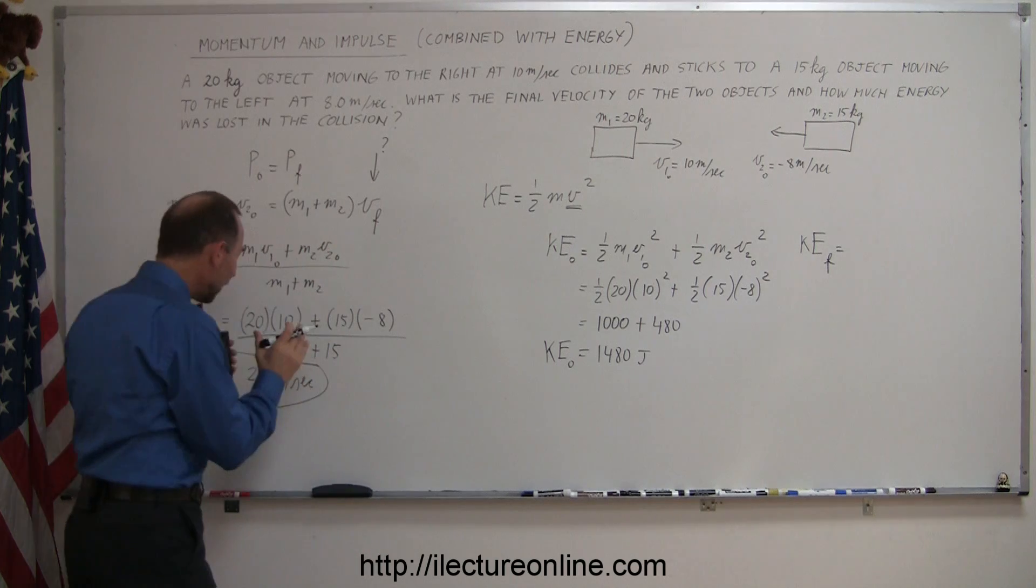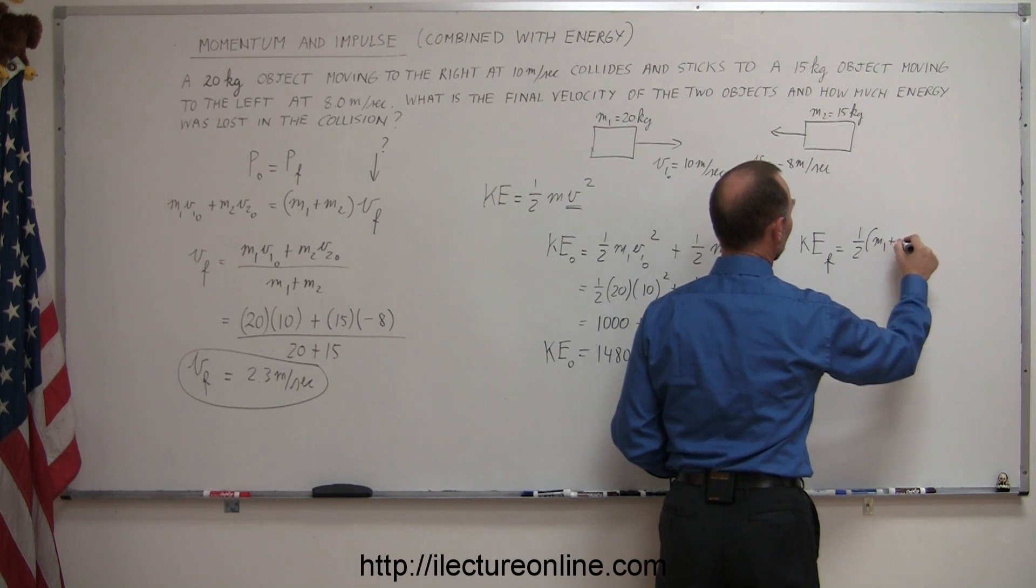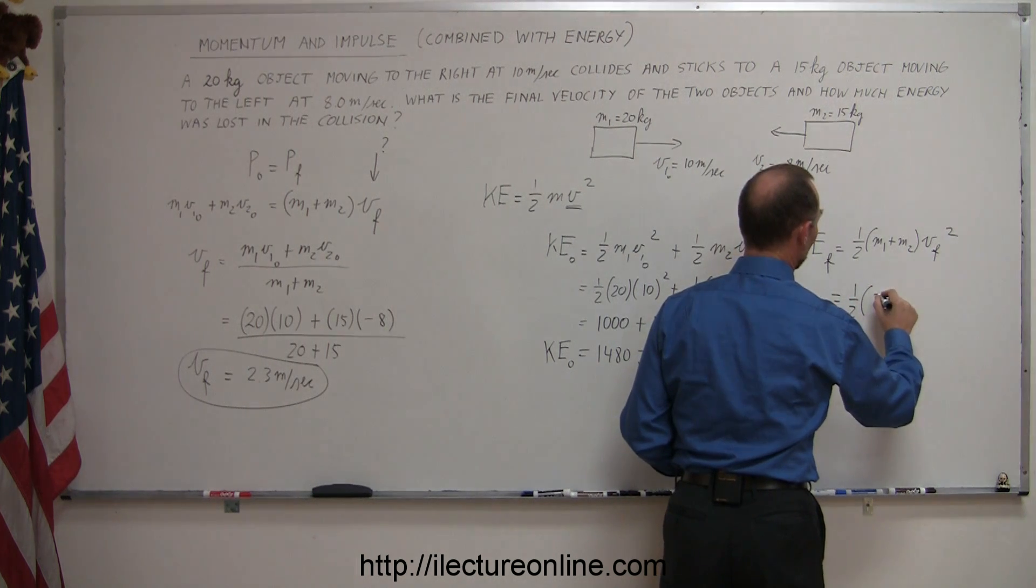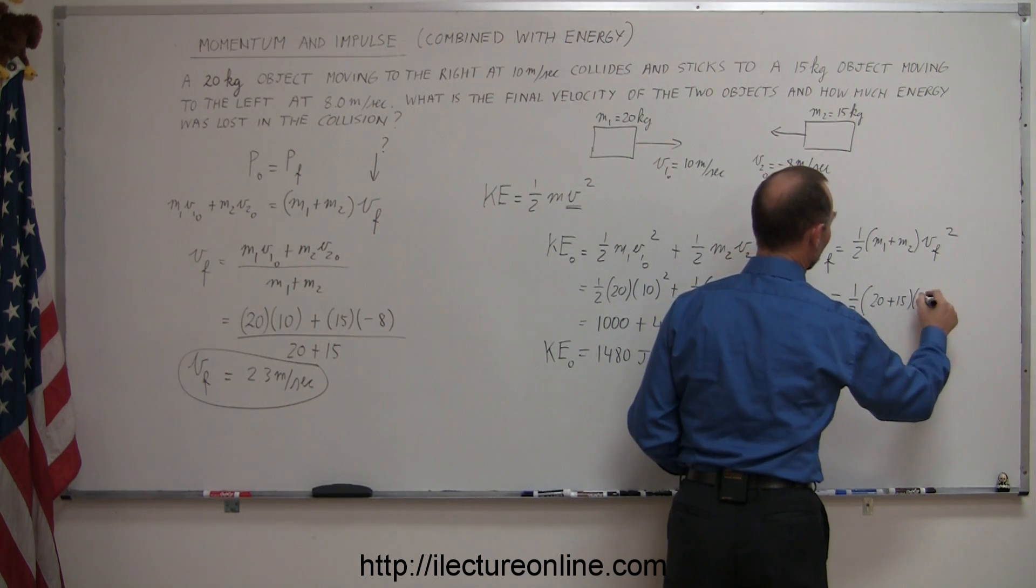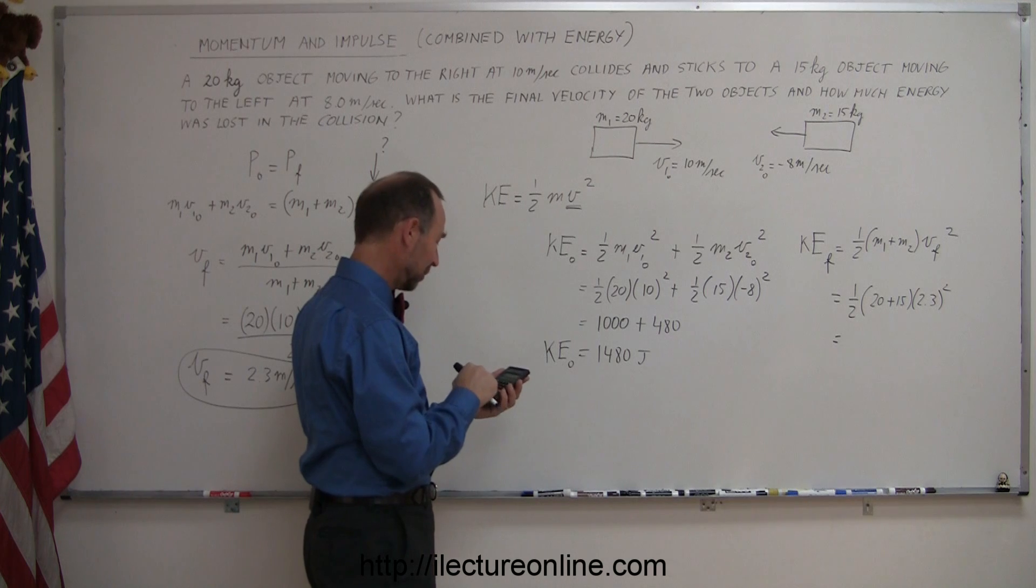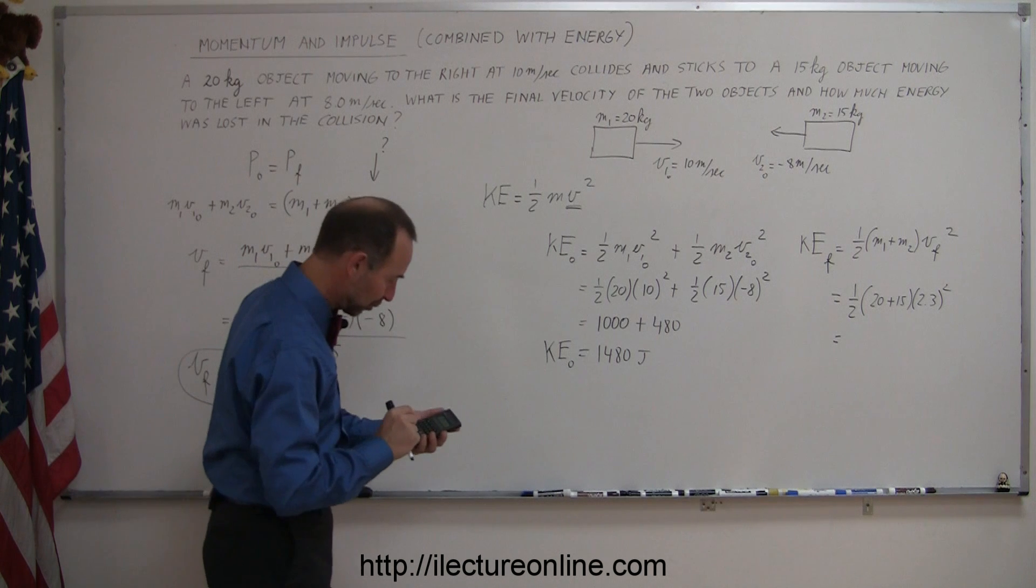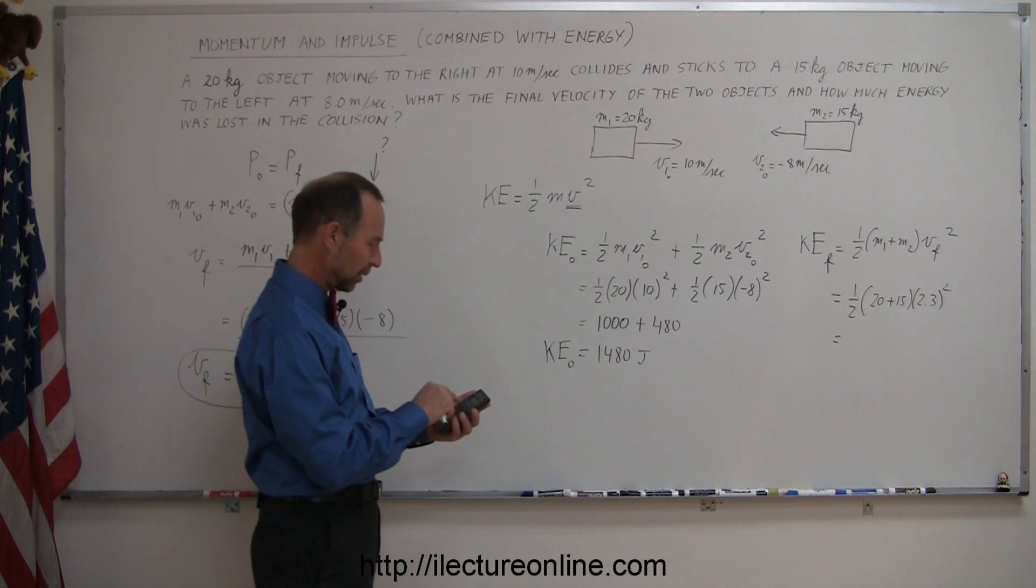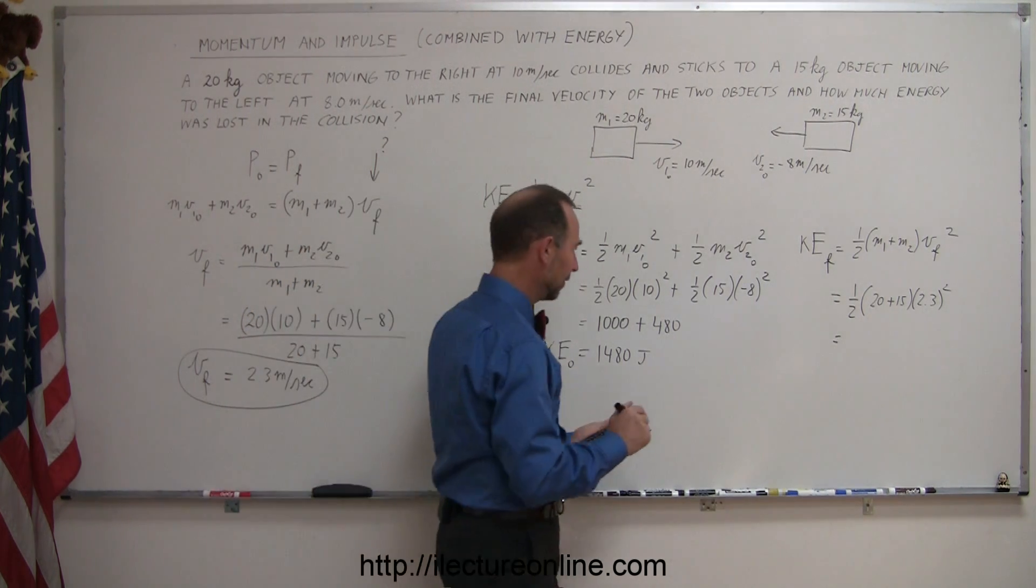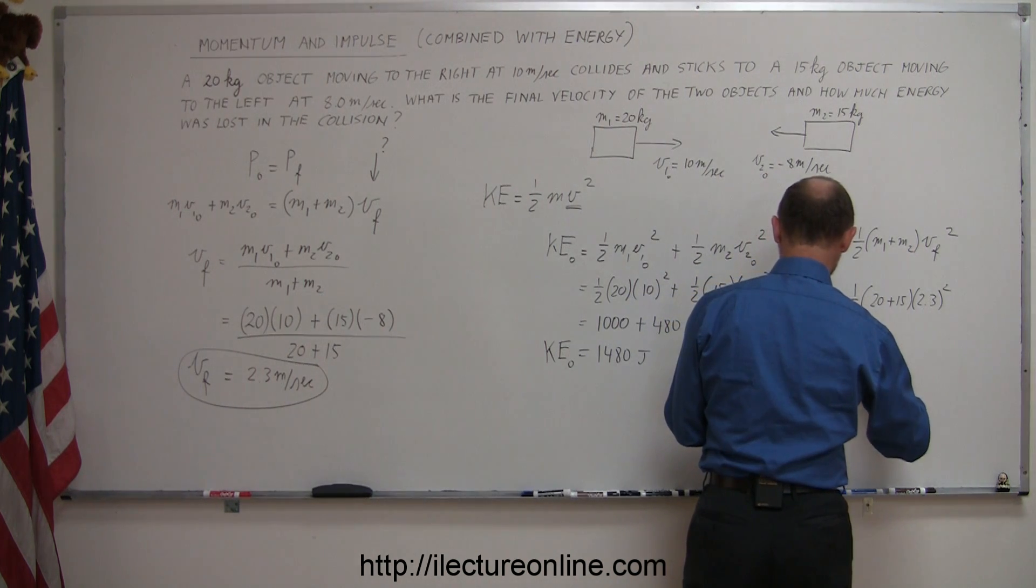So we have one-half times the sum of the two masses times v final squared, so that would be one-half times 20 plus 15 times 2.3 squared. And for this one, I think I'll go ahead and use my calculator, it's a little bit more complex, and of course I'm going to use the exact number that I got from my calculator, because it wasn't exactly 2.3, so we have 2.3 squared times 35 times 0.5. And, wow, so kinetic energy final is equal to 91 joules.